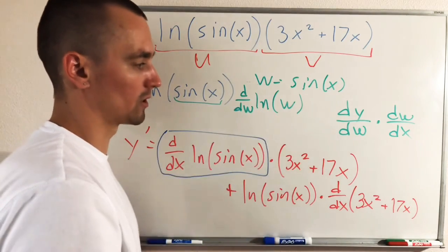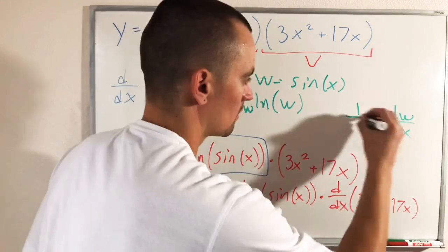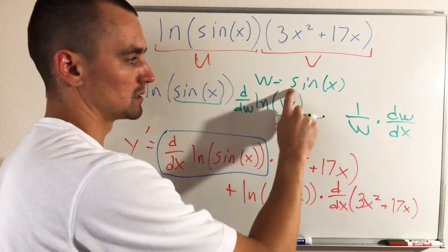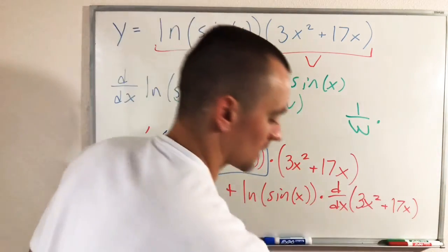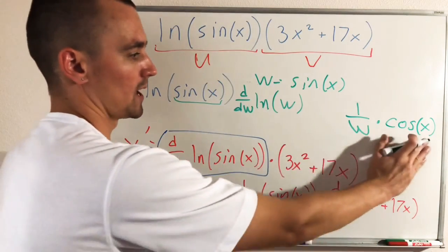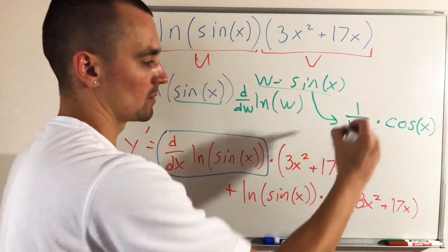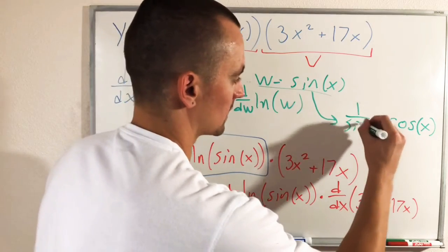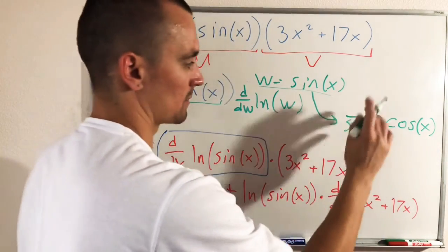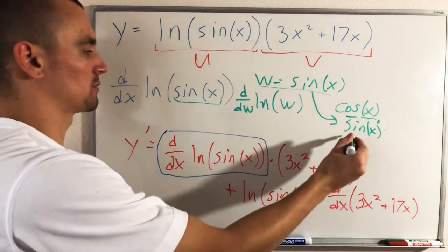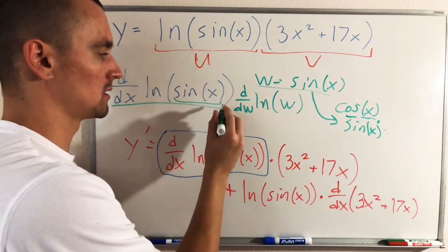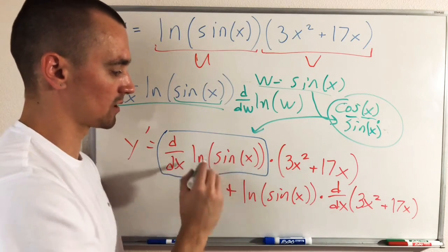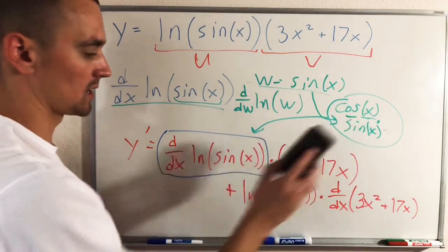The derivative of ln(w) with respect to w is 1 over w. The derivative of w — which is sine x — with respect to x is cosine x. So we have (1/w) times cosine x. Substituting sine x back in for w gives us 1 over sine x times cosine x, which equals cosine x over sine x. So cosine x over sine x is the derivative of ln(sin(x)), and we plug that in for the corresponding term in our product rule expression.